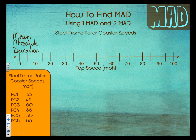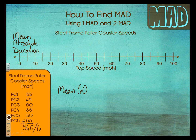So what we're going to do is look at how to calculate MAD. First thing I'm going to do is take the scores of 55, 45, 60, and find out what their average is. If I add all of these up, they come out to be 360 miles per hour total. And since there are six, I'm going to divide by six, and that gives me an average, or a mean, of 60 miles per hour. So the mean is 60.